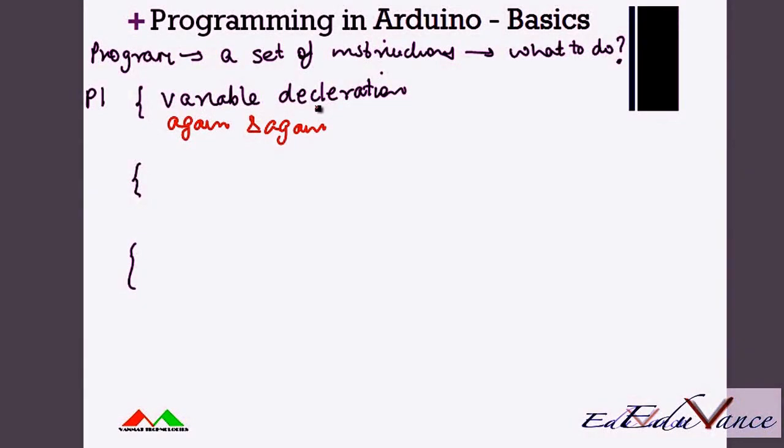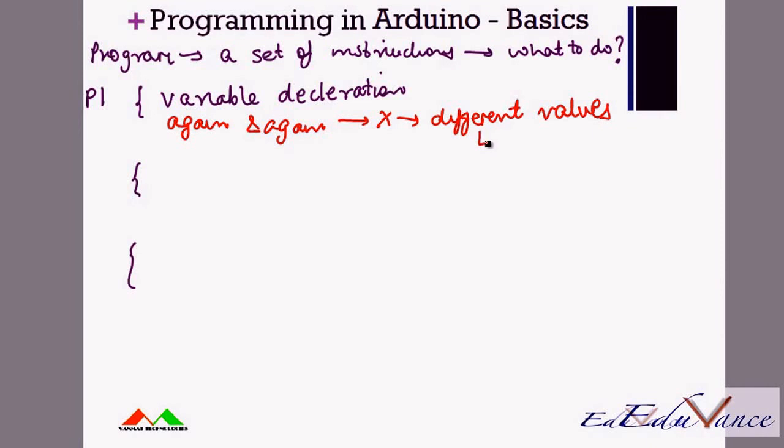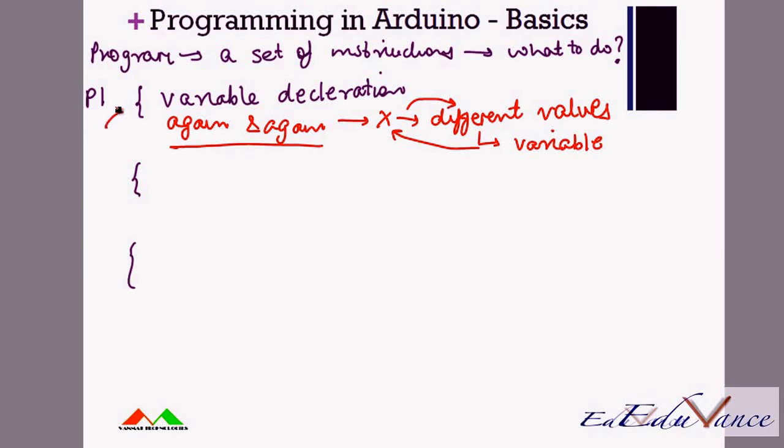Phase 1 or part 1 of your program would be something called variable declaration. What do you do in your variable declaration? Say some value or object that you would use again and again. That object, let's say x for example, can take different values. Different means variable. So your variable x, if you end up using again and again and that takes different values, then I would use that as part of my variable declaration.